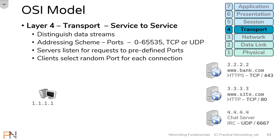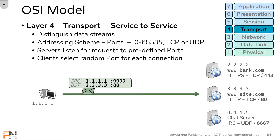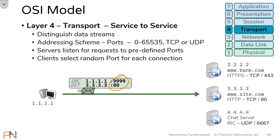For each request made by the client, the client is going to choose a random port number to use as the source port for the connection. So a connection from our client to site.com would include a source port of 9999 — that's the port the client randomly selected for this particular connection. The destination of this packet is the IP address of site.com, going to TCP port 80, which is the HTTP application. The source and destination IP addresses exist in the Layer 3 header of the packet, and the source and destination ports exist in the Layer 4 header of the packet.